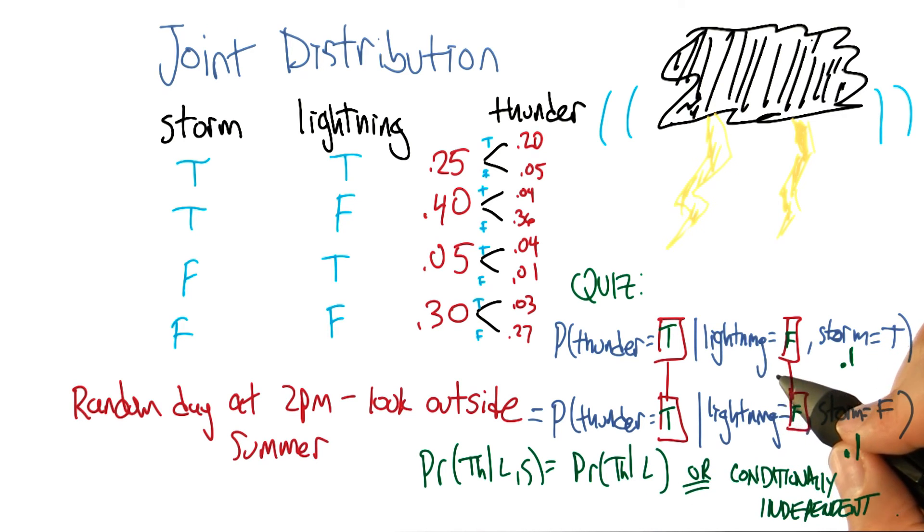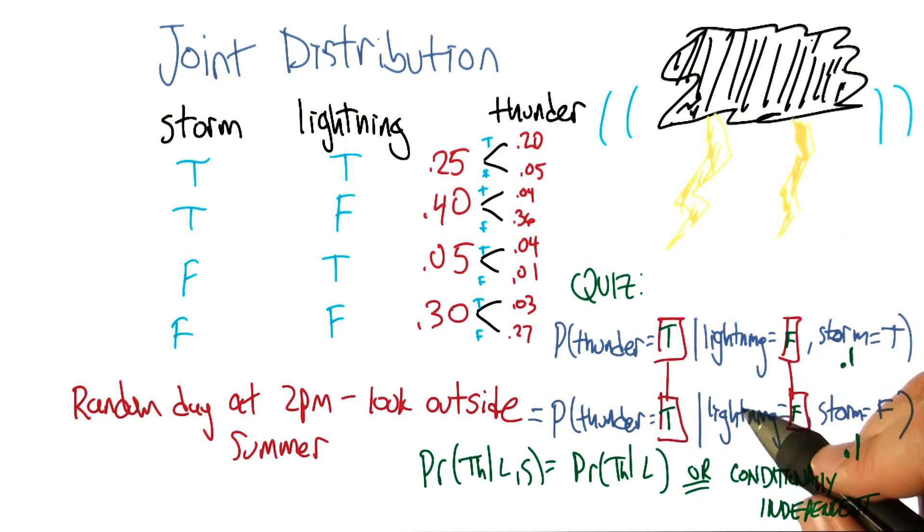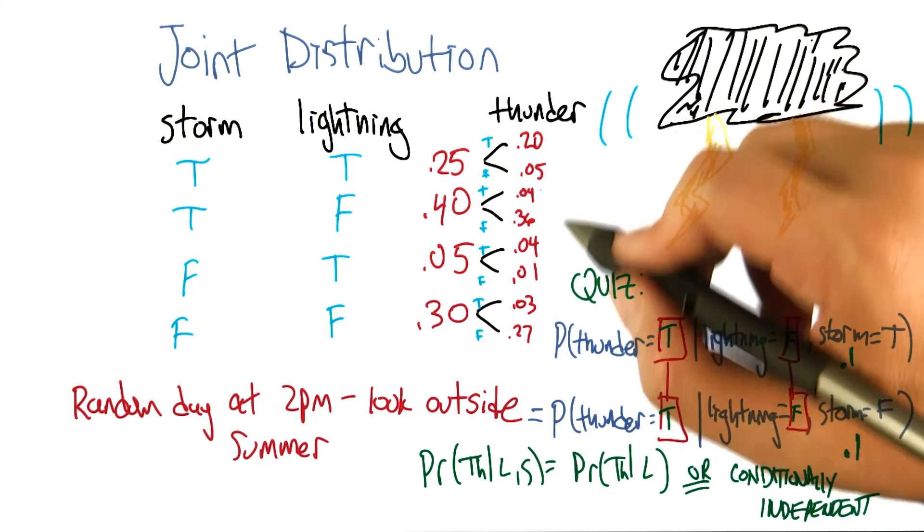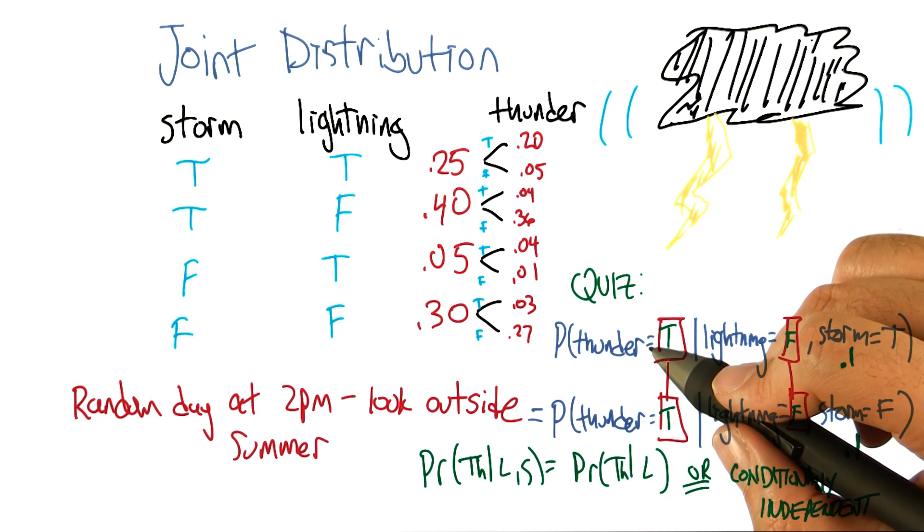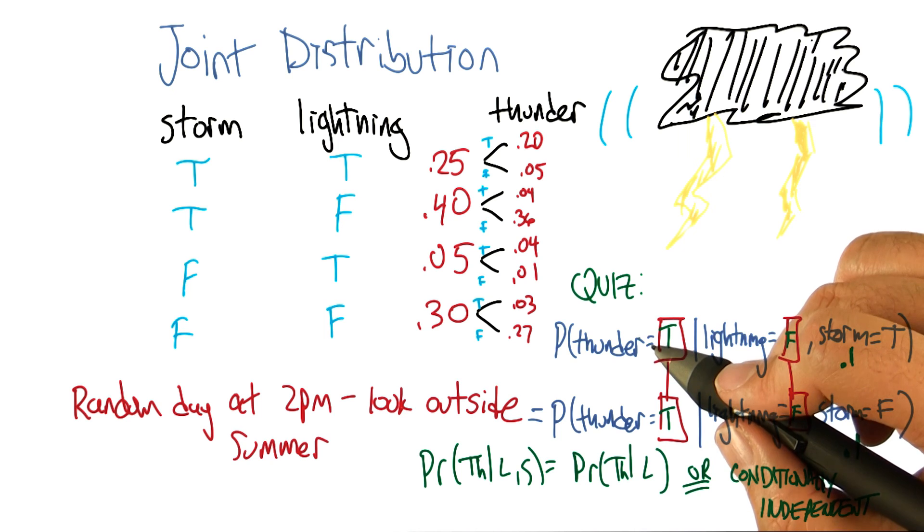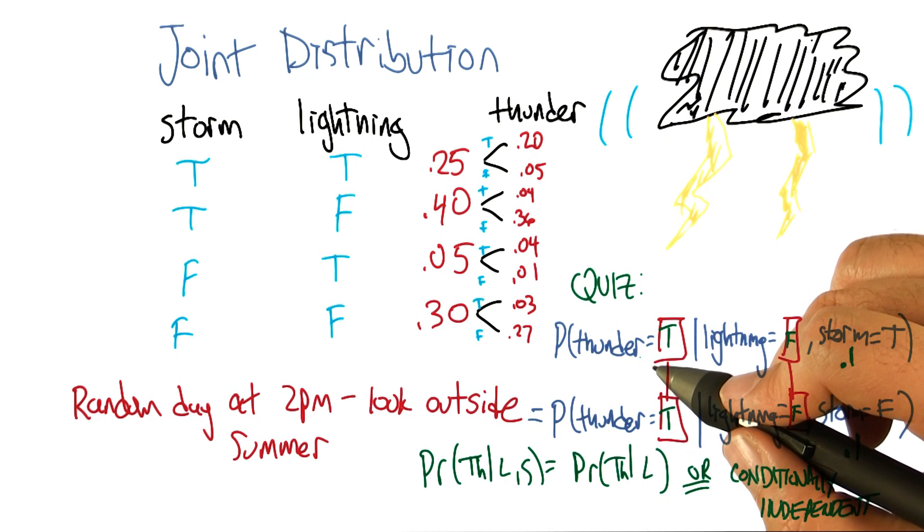All right, so now what we're going to do next is say, okay, well given that we have this nice property, and yeah, I worked a little bit to make sure that the numbers worked out. It doesn't always happen this way, but here we had some nice conditional independence, and what we're going to do next is look at a nice representation of that kind of information.